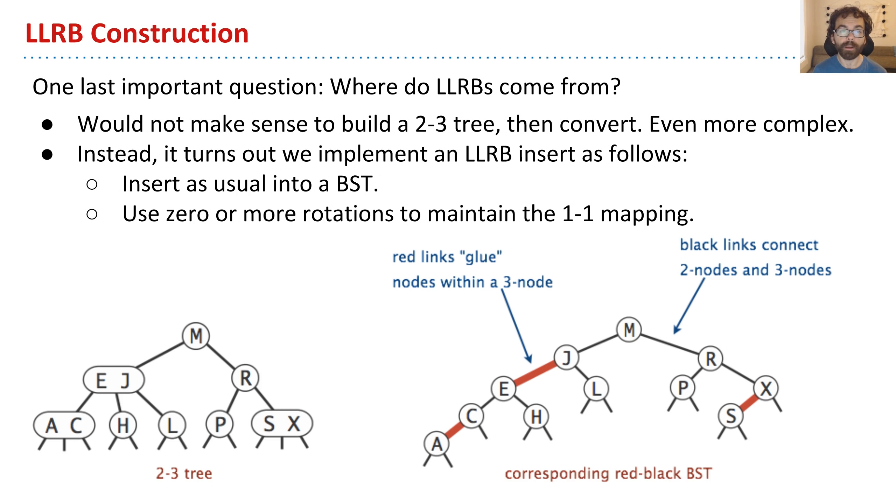Well, one thing we could do is actually implement a 2-3 tree and then convert it. But this defeats the whole point. Remember, one of the reasons I said we can't just use 2-3 trees is that they're hard to implement. So building an implementation that then needs to be converted into a red black tree would be just silly, right? So instead, it turns out that what we can do, and we're going to go through this in a lot of detail soon, is we can implement an LLRB as follows. We're going to insert into our binary search tree, and then we're going to use some number of rotations to maintain a one-to-one mapping. So we're going to do preventative maintenance on our tree to keep it from getting too tall, rather than trying to fix it all at once. And so in the coming videos, that will become very clear.